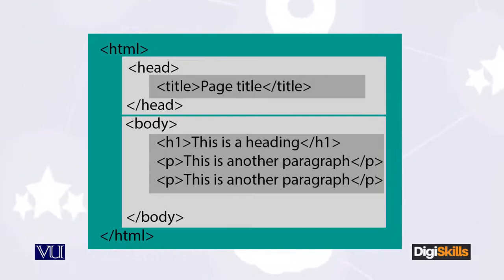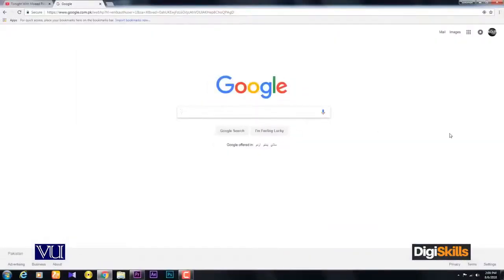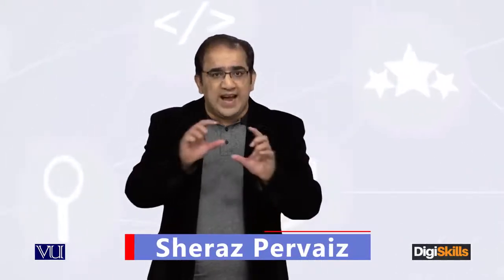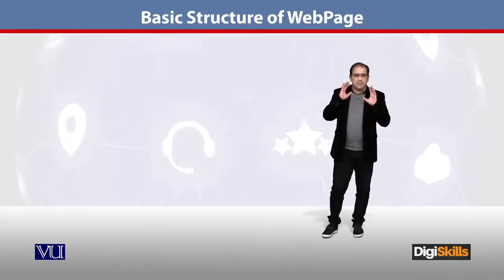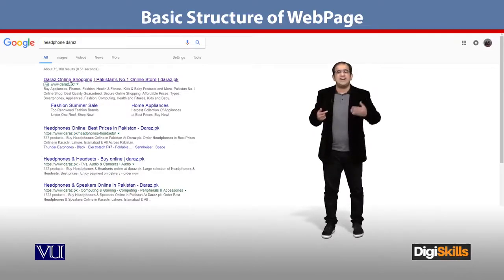What we want to discuss is the title tag. Moving forward, the title tag is the important tag. For example, I have written google.com watches. The title tag is the title of the page.